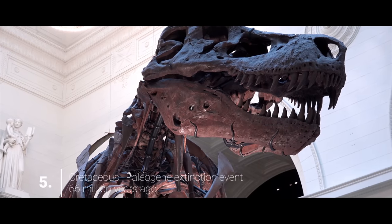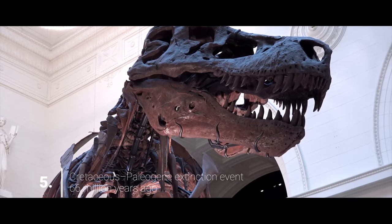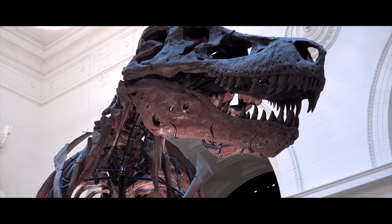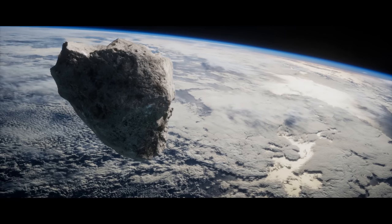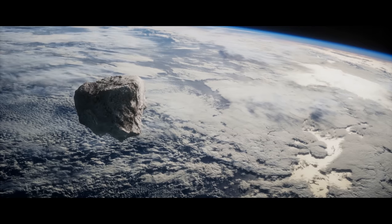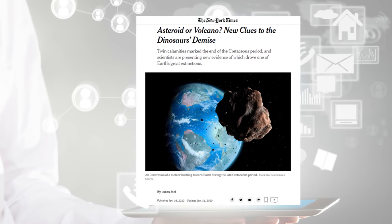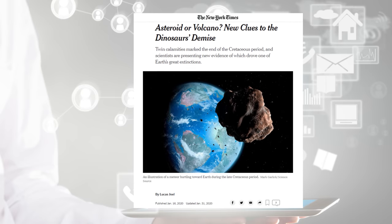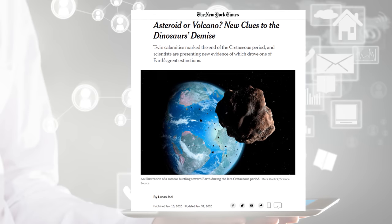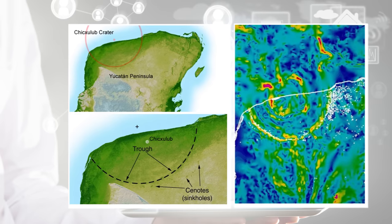Then came the Cretaceous-Paleogene extinction event 66 million years ago, which is best known for the end of the dinosaur, except for the birds. This event was caused by an asteroid impact, which created the Chicxulub crater in the Gulf of Mexico's Yucatan Peninsula. Some scientists also speculated about other causes, like the erupting volcanoes at the Indian subcontinent. But a 180-kilometer-wide crater is hard to argue away.